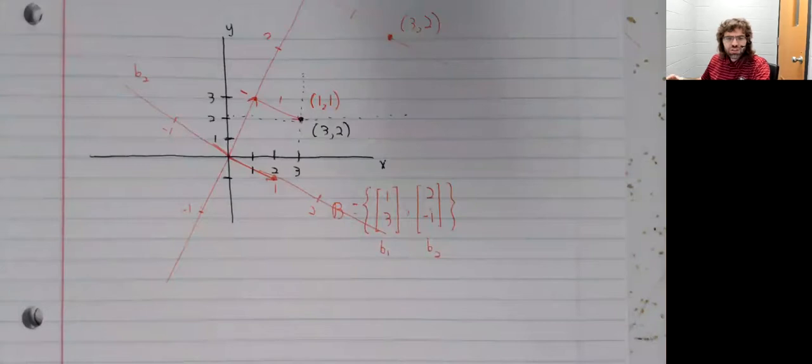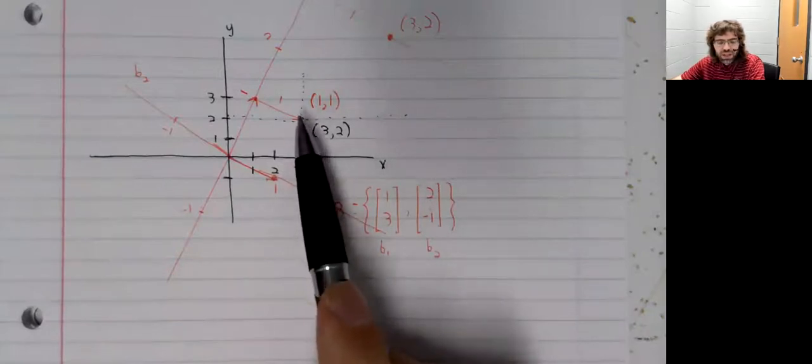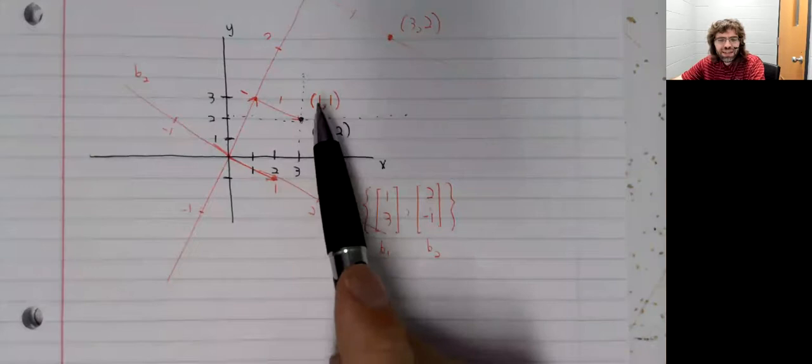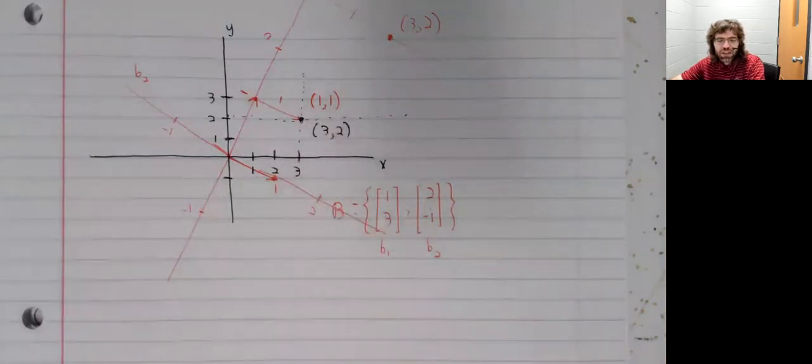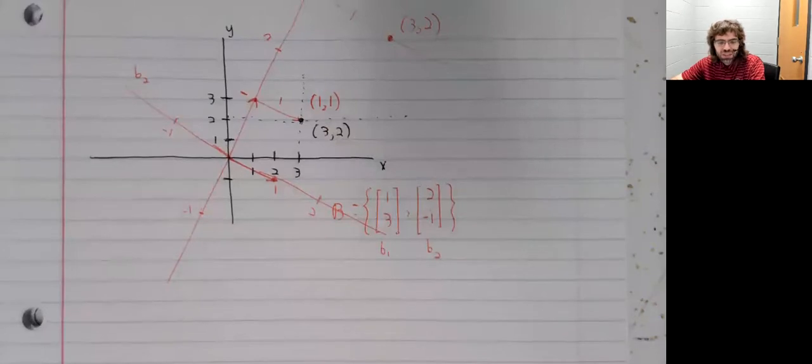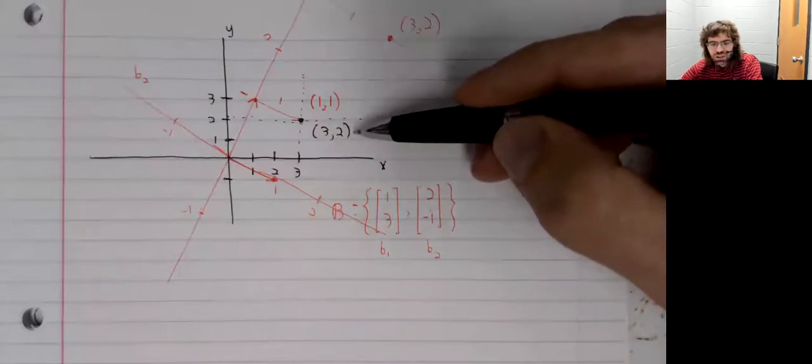How does this relate to coordinate vectors? Well, we see that this point has two different names, as it were, depending on which axes we're using. The x-y axis gives us [3, 2].